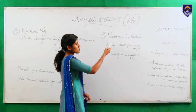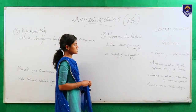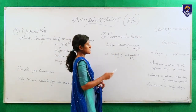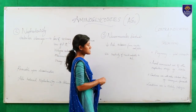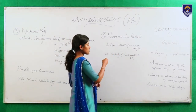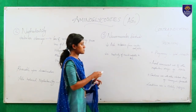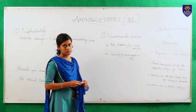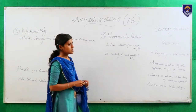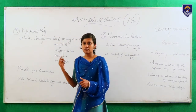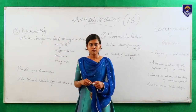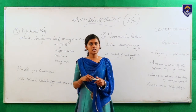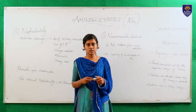Next is neuromuscular blockade. This drug may reduce the acetylcholine release from the motor end plates and also decrease the sensitivity of muscle end plates to acetylcholine. So the main toxicities of the drug are: ototoxicity, nephrotoxicity and neuromuscular blockade.